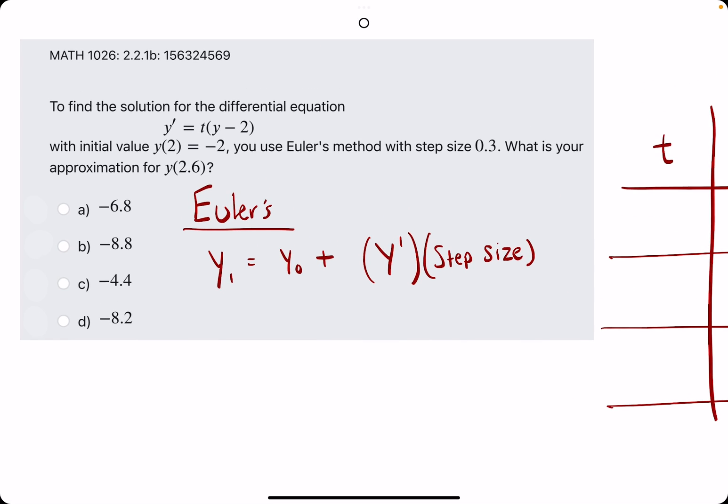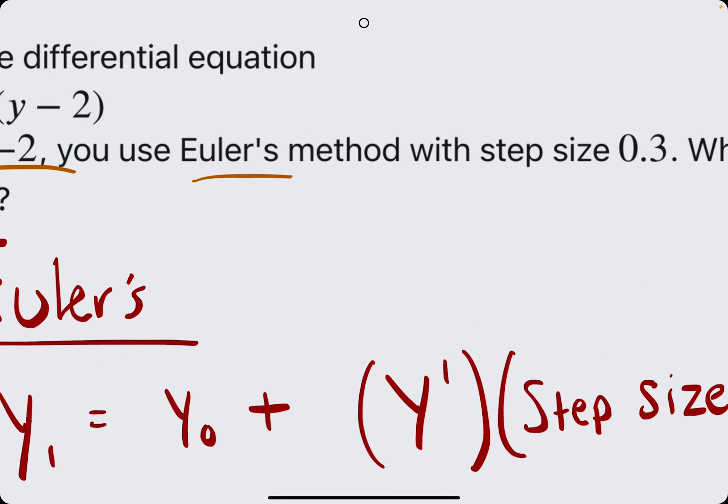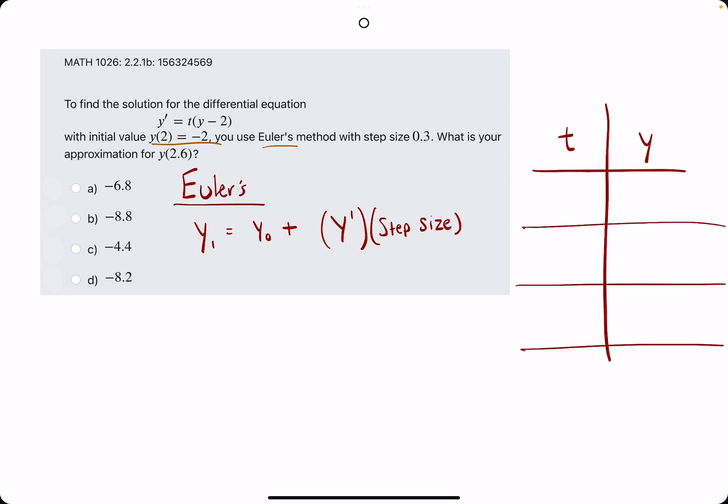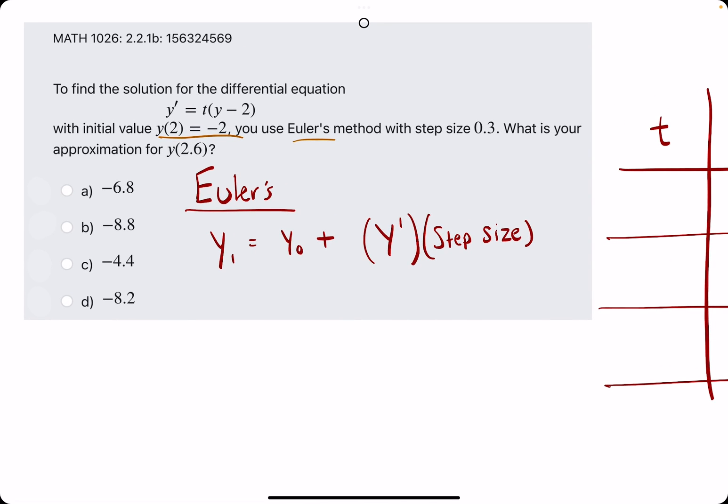Okie dokie. In this problem, they say to find the solution to this differential equation with the initial value y of 2 equals negative 2, you use Euler's method. I know it looks like Euler's, but math heads might say Euler's, so that's the pronunciation I will use.